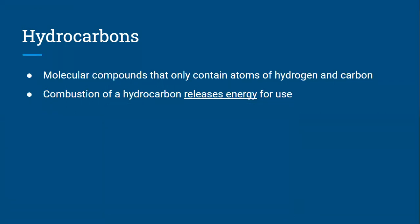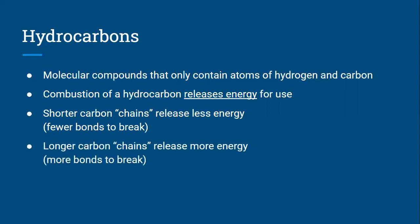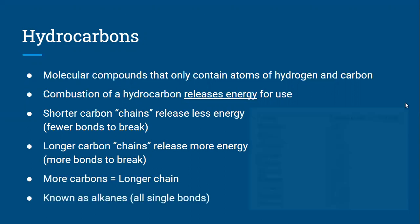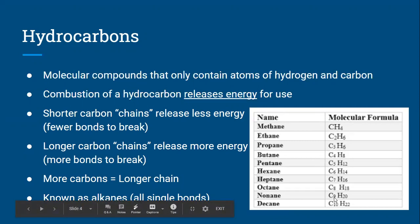The longer the carbon chain, the more energy that is produced. The shorter the carbon chain, the less energy that's released — more carbons is what makes the chain longer. In the table to the right, at the top you see methane with one carbon. As you go down the list, the number of carbons increases, making the chain longer. All of these are known as alkanes, ending with A-N-E, because they all contain single covalent bonds.